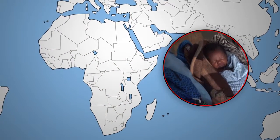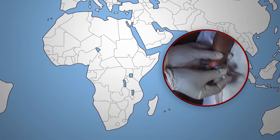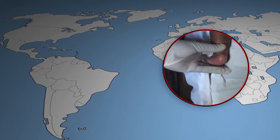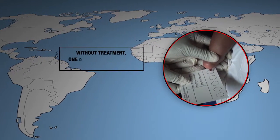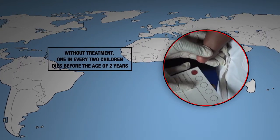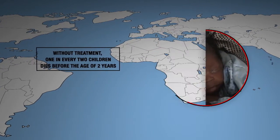Children living with HIV are also at a disadvantage. In 2012, only half as many children received treatment as adults. And without treatment, one in every two children dies before their second birthday.